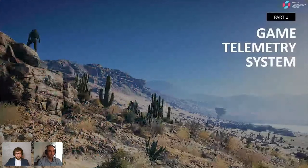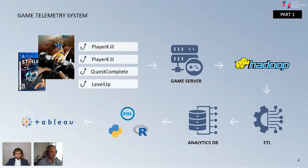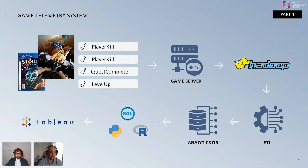A game telemetry system is basically a data collection pipeline. Games send events — I'll use the words events, tracking, or telemetry almost interchangeably, because they all have the same purpose. Here on the screen, a player is playing Starlink, a Ubisoft game I highly recommend. We can see hooks, which are what we call moments of interest in the game. These hooks are data points sent from the client to the game server with specific attributes related to that moment of interest.